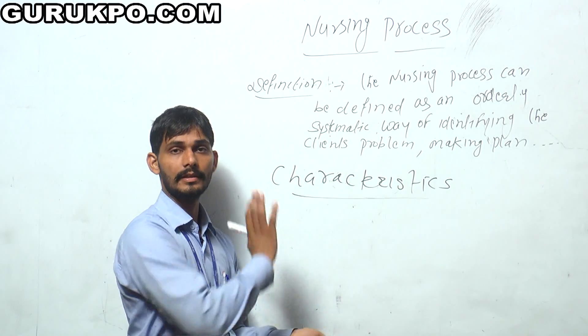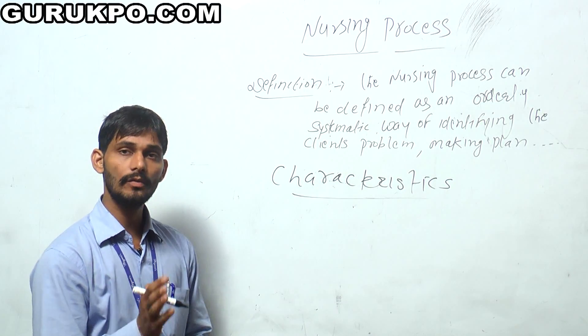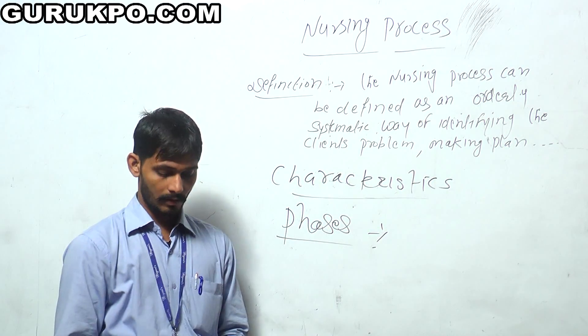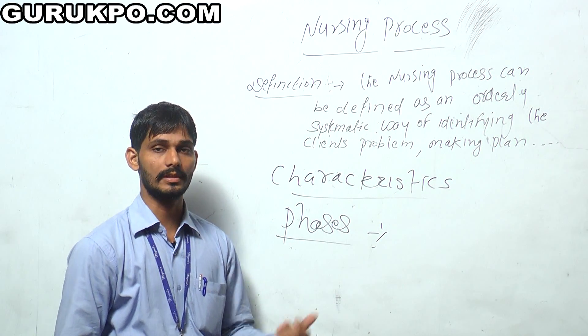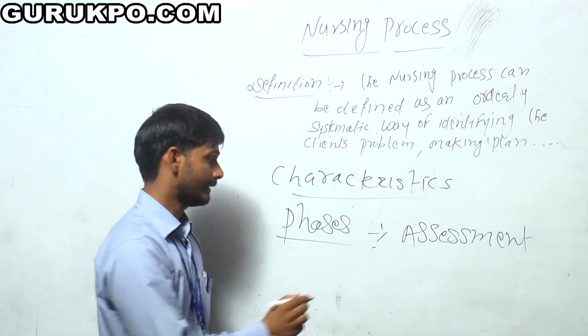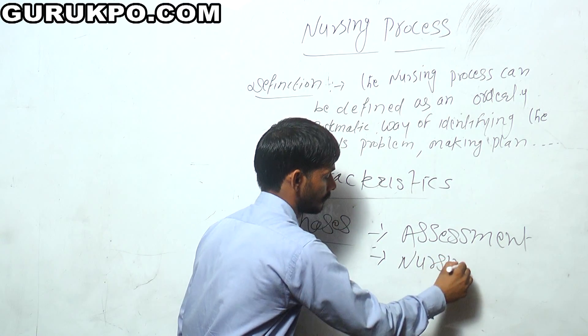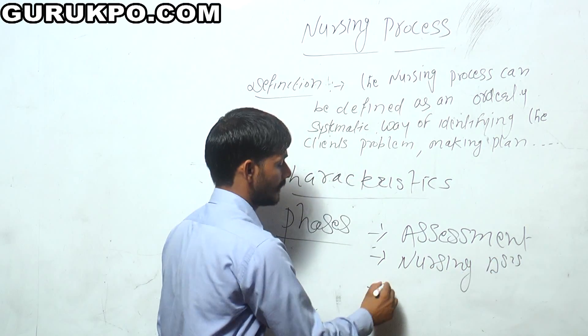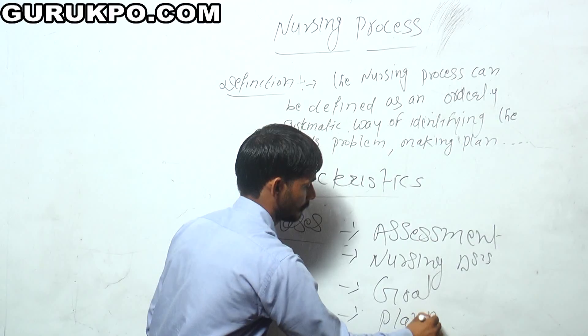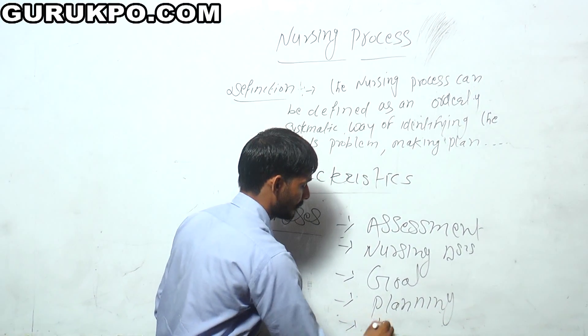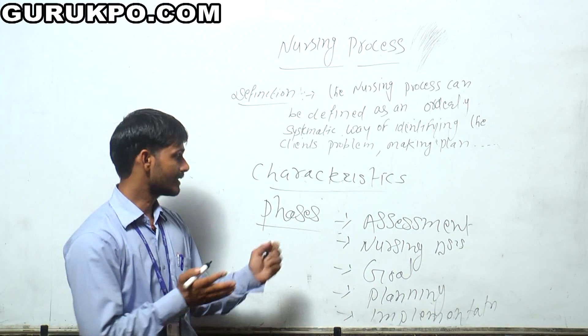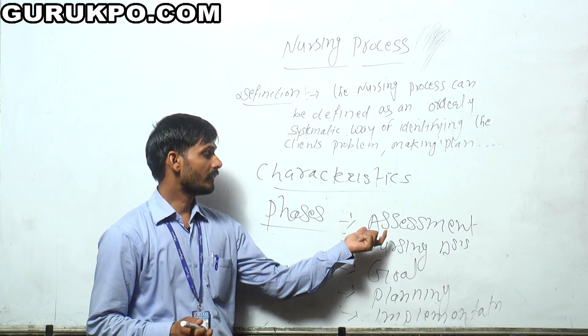Next, we will see the phases or components of nursing process: first, assessment; second, nursing diagnosis; third, goal; next, planning; next, implementation; and next, evaluation. We will see one by one. Assessment is further classified into two subtypes.